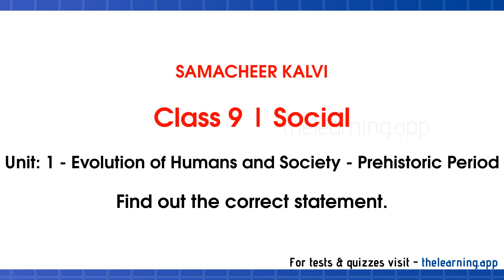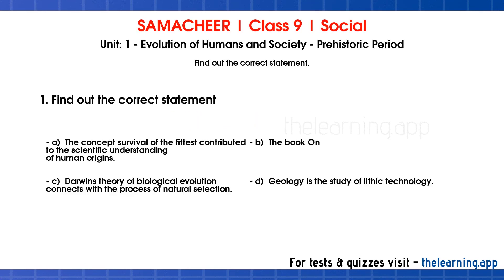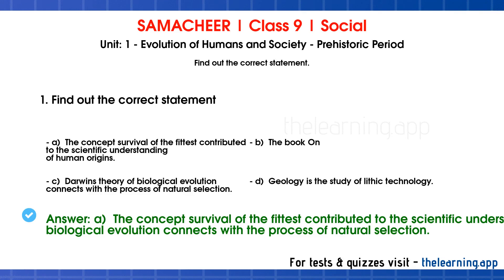Find the correct statement. Option A: the concept 'survival of the fittest' contributed to the scientific understanding of human origins. Option B: the book On the Origin of Species was published by Herbert Spencer. Option C: Darwin's theory of biological evolution connects with natural selection. Option D: geology is the study of lithic technology. The correct answer is Option A — Darwin's theory of survival of the fittest relates to human origins.